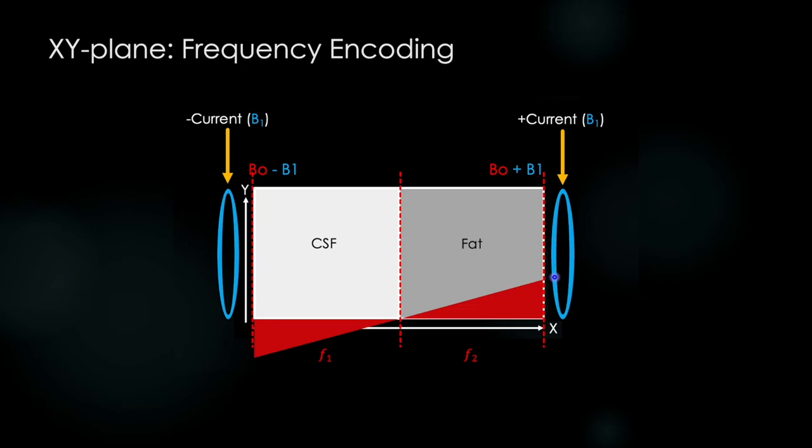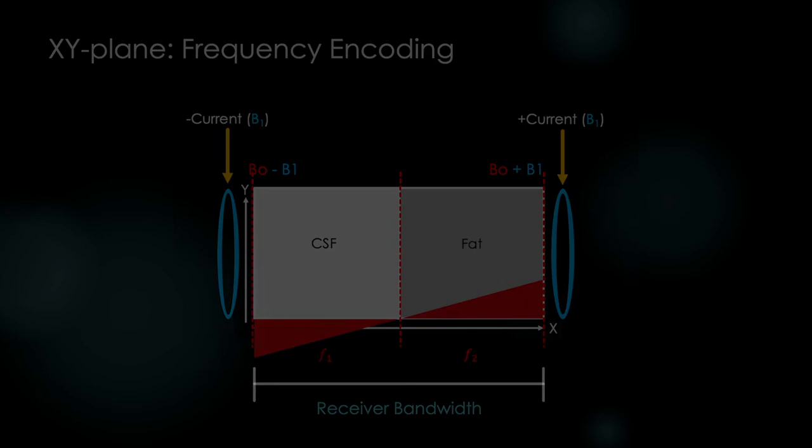There will always be a range of frequencies within that voxel. And therefore when analyzing the frequencies coming from our recorded signal, we need to select a range of frequencies to look for. This range of frequencies we pick is called the receiver bandwidth. So we have a transmit bandwidth, and we have a receiver bandwidth, and both of these will affect image quality.